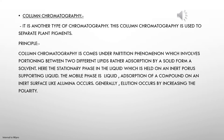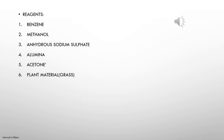Another type of chromatography is column chromatography, which is used for the separation of plant pigments. This chromatography is also based on the partition principle. The reagents used are benzene, methanol, anhydrous sodium sulfate, alumina, acetone, and plant material.